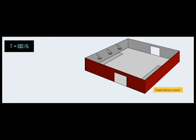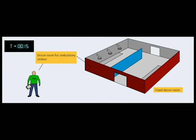The fixed decon room is prepared and ready to receive patients. A curtain down the center of the room provides a sense of privacy allowing men and women to shower simultaneously. The decon unit leader decides to use this room for those ambulatory victims who can perform self-decontamination. This information is communicated to the casualty care unit leader.